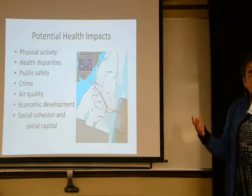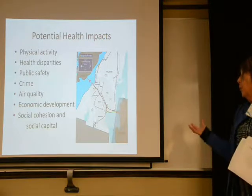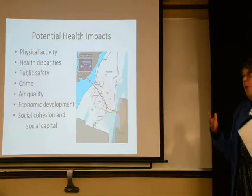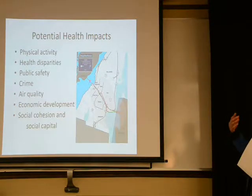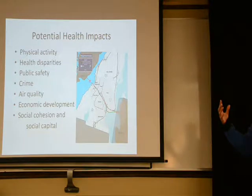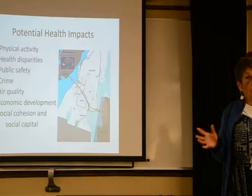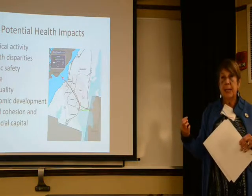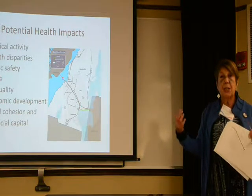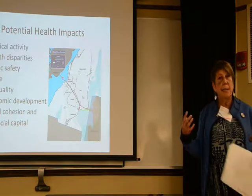When we began to do the impact assessment, we had to look at what possible changes would occur — positive, negative, or staying the same. Physical activity, health disparities, public safety, crime, air quality, economic development, social cohesion, and social capital were all listed as possibilities. In terms of pulling in stakeholders, it was a rapid assessment so we didn't have a lot of time, but we went to neighborhood associations and community organizations involved with recreation and open space in Fall River, and they provided great input to the project.